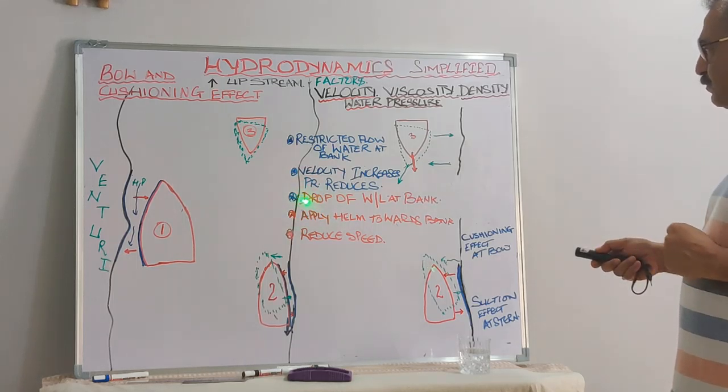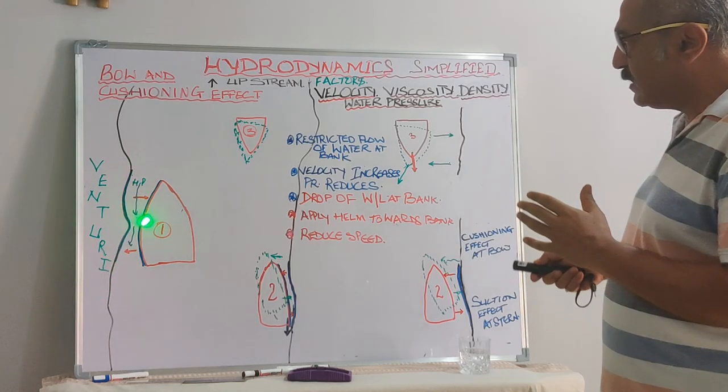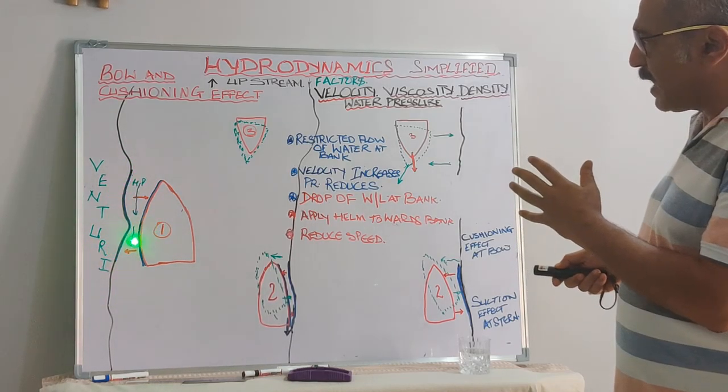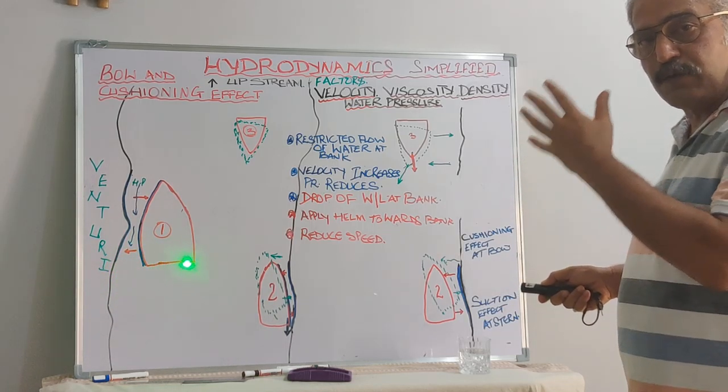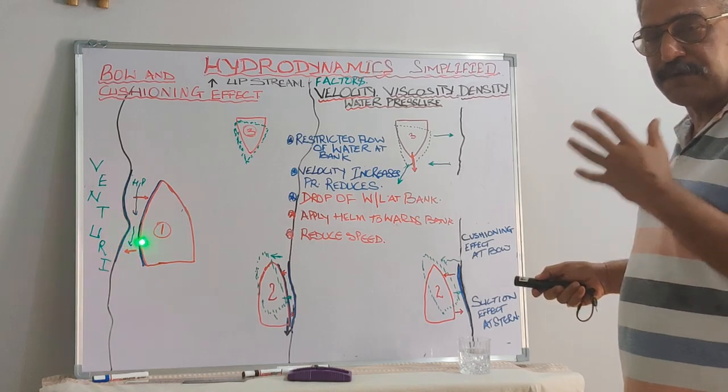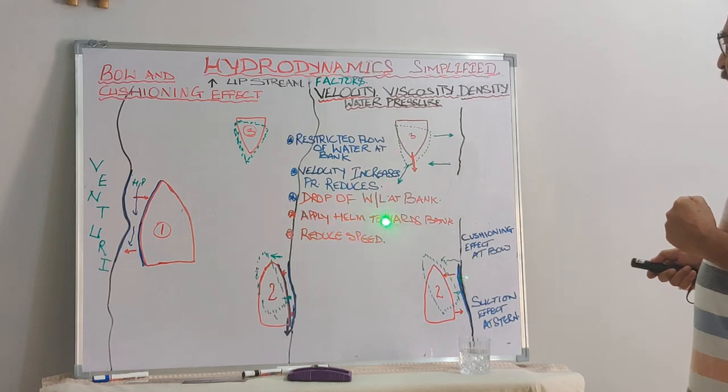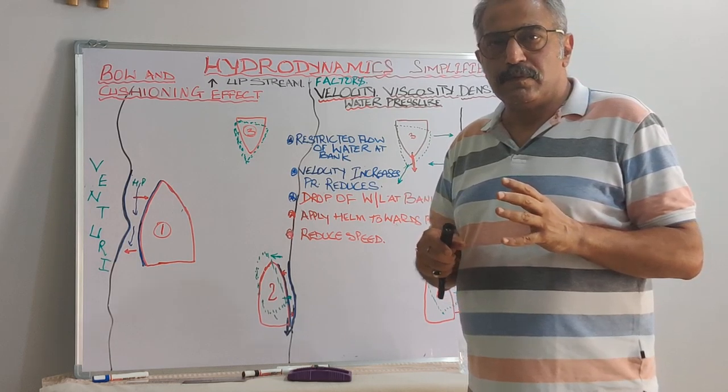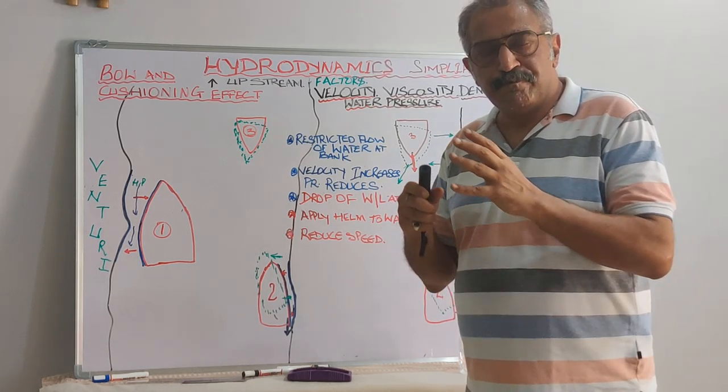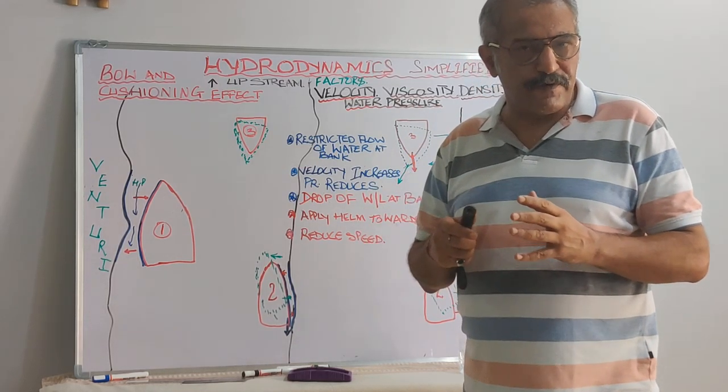Same time what we experience is drop of water level at the bank. Because of these effects, the drop of water level at the bank takes place due to the suction effect, due to the draft and the void created by the underwater volume of displacement of the vessel. And as we spoke earlier, apply the helm towards the bank and reduce the speed. These are the only two things what we can do to stay clear of the bank due to bow cushioning effect.